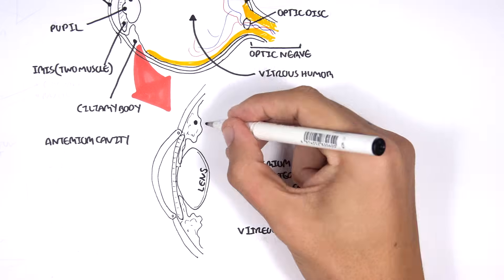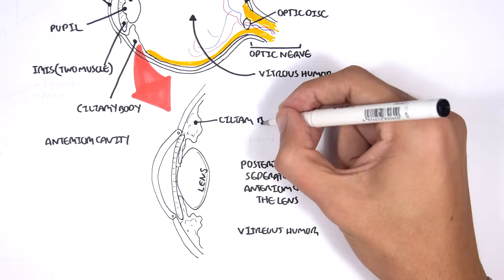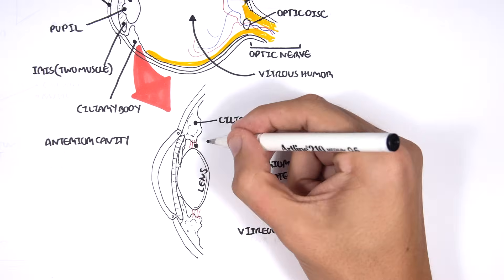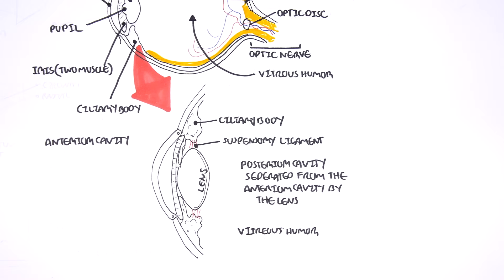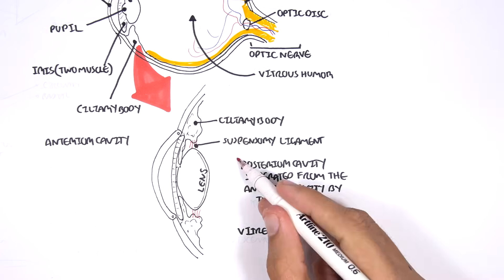Here are the ciliary bodies. Coming off the ciliary bodies and connecting the lens are suspensory ligaments. Thus, we can say that the ciliary bodies are responsible for the shape of the lens, and we will learn about this later on.